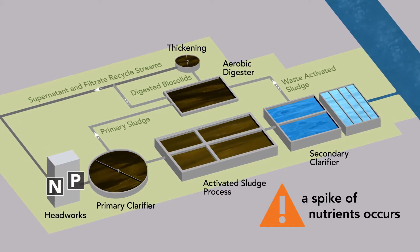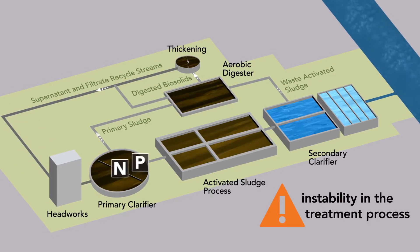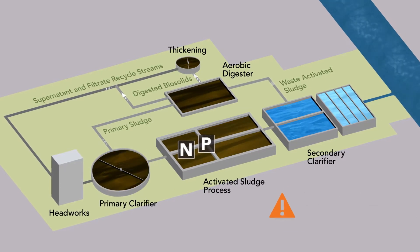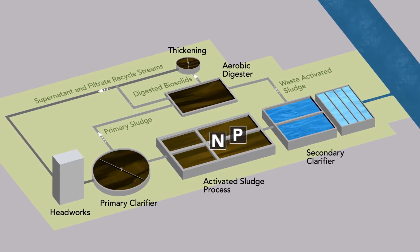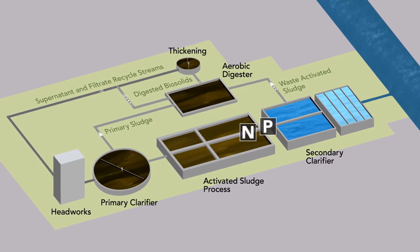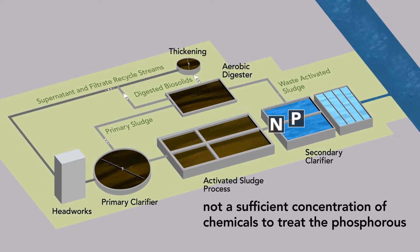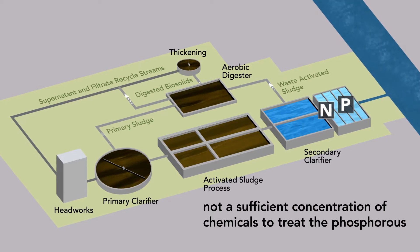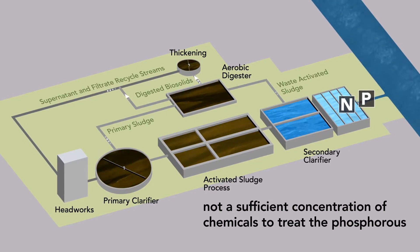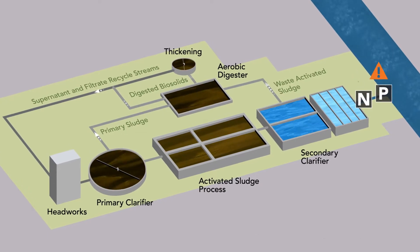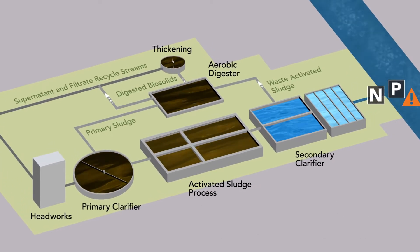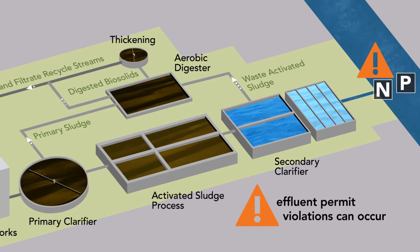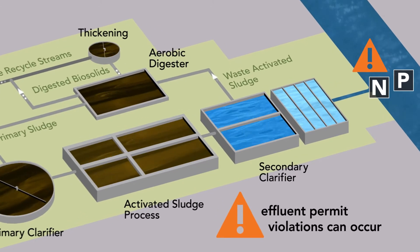This spike causes instability in the main treatment process because the biology is not acclimated to the load, or there is not a sufficient concentration of chemicals to treat the phosphorus. If the spike of nutrients is not effectively processed, effluent permit violations can occur.